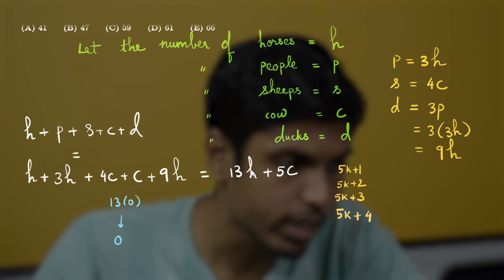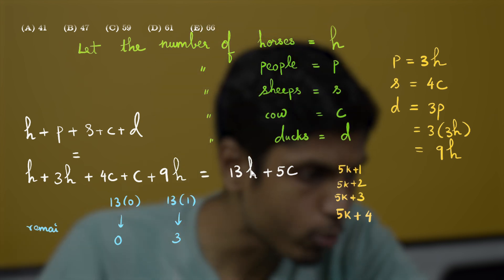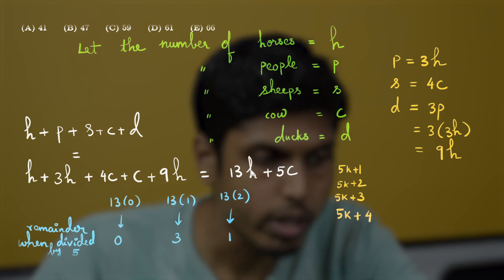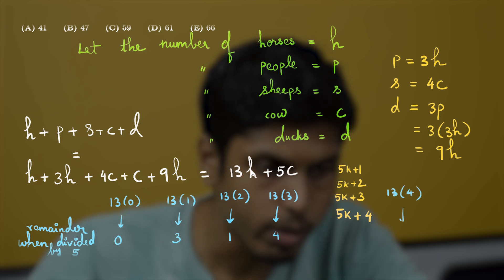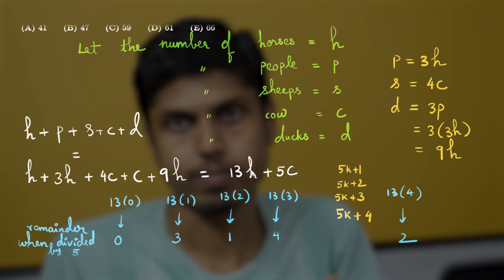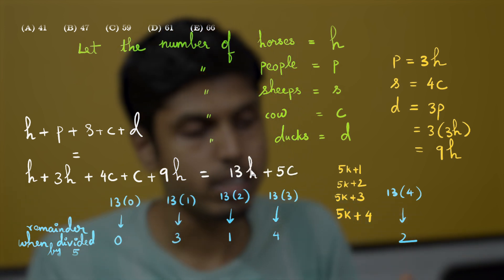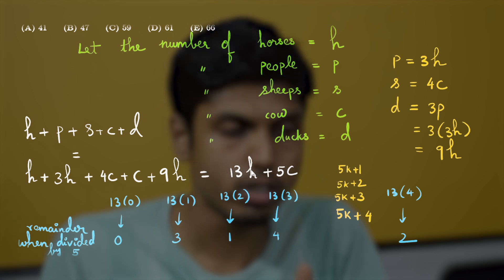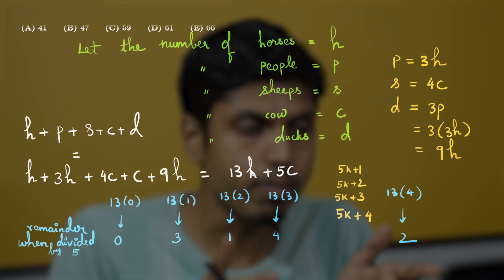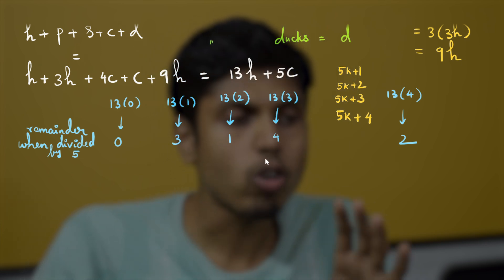Let's compute the remainders when multiples of 13 are divided by 5: 13×0 gives remainder 0; 13×1 = 13 gives remainder 3; 13×2 = 26 gives remainder 1; 13×3 = 39 gives remainder 4; and 13×4 = 52 gives remainder 2. As you can see, no two remainders are the same — they are all distinct and cover the entire residue class, meaning all remainders 0 through 4.